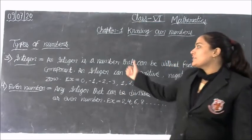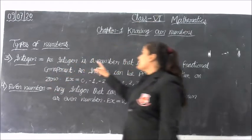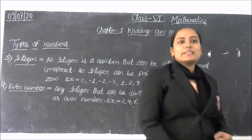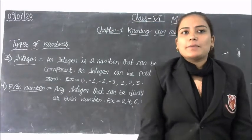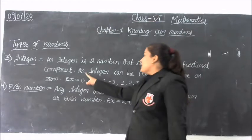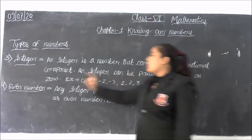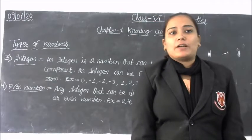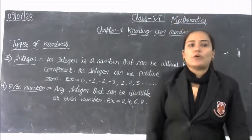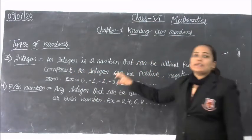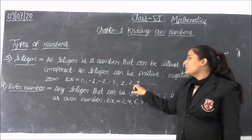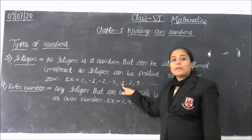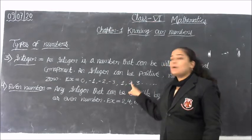Now our third definition: integer. An integer is a number that can be without a fractional component. An integer can be positive, negative, or zero. We studied that natural numbers and whole numbers are positive only. But integers can be negative also, positive also, and zero also. So minus 1 and plus 1 are both integers. Minus 2 and plus 2 are both integers.